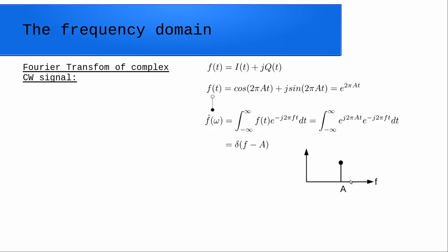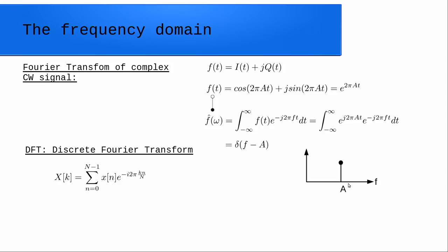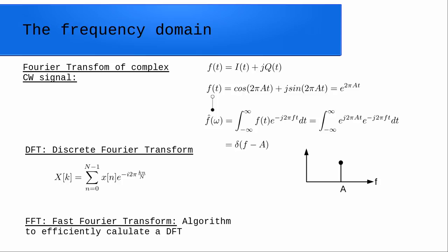For practical computational purposes we use a DFT — a Discrete Fourier Transform — where the integral becomes a summation of signal components. Normally we use a Fast Fourier Transform (FFT), which is an algorithm to efficiently calculate a DFT.